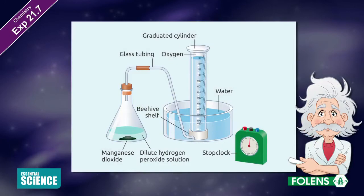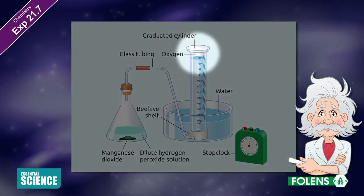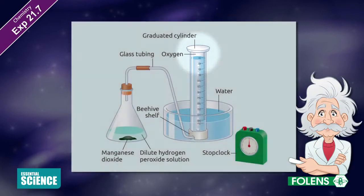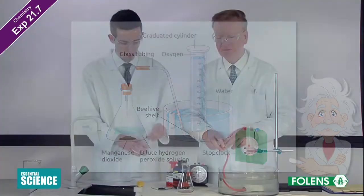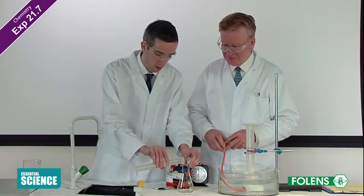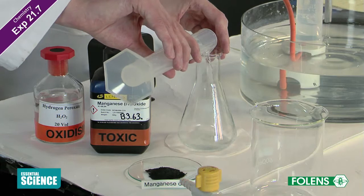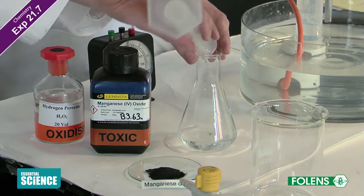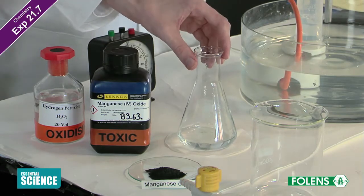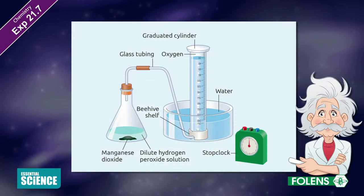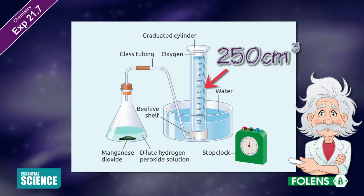We will study the rate of reaction by collecting the oxygen gas over water in a graduated cylinder using the apparatus shown on the screen. Using a 100cm³ graduated cylinder, place 50cm³ of 20 volume hydrogen peroxide in a conical flask. Set up the apparatus shown. Note that the oxygen produced will be collected in a 250cm³ graduated cylinder.